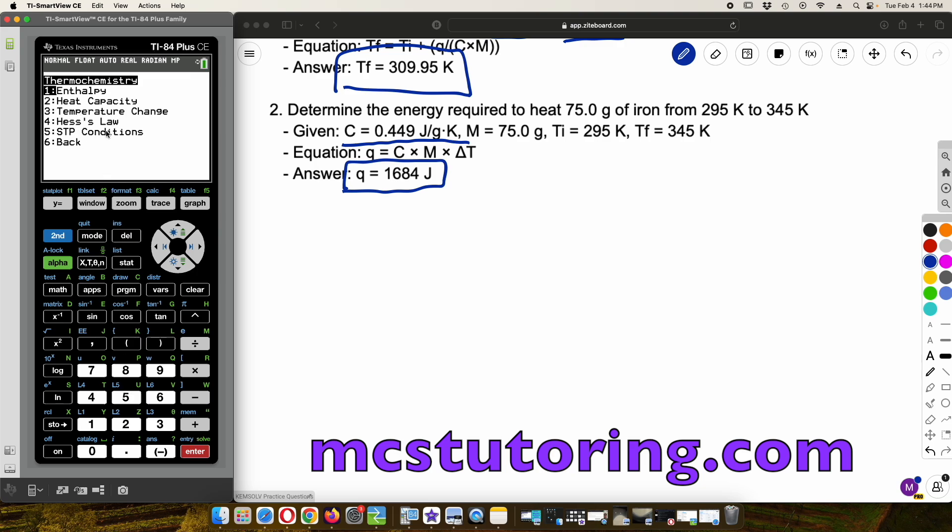And then one last thing is STP conditions, standard temperature and pressure. So, let me show you that. So, in case you don't have it memorized, we've got it here. Standard temperature and pressure is zero degrees Celsius, which is technically 273.15 Kelvin. Now, depending on how much of a stickler your teacher is or your instructor, you just add 273 to Celsius, or in this case, maybe 273.15. Okay. The standard pressure is 1 atm, which is 101.325 kilopascals.